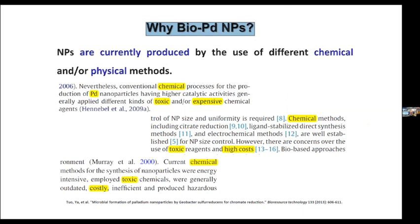Currently, nanoparticles of different metals are usually produced by chemical and physical methods. These are usually described as highly energy-intense processes using rather toxic chemicals, and leading also to relatively high cost, both because of the toxic chemicals and especially because of the energy consumption.